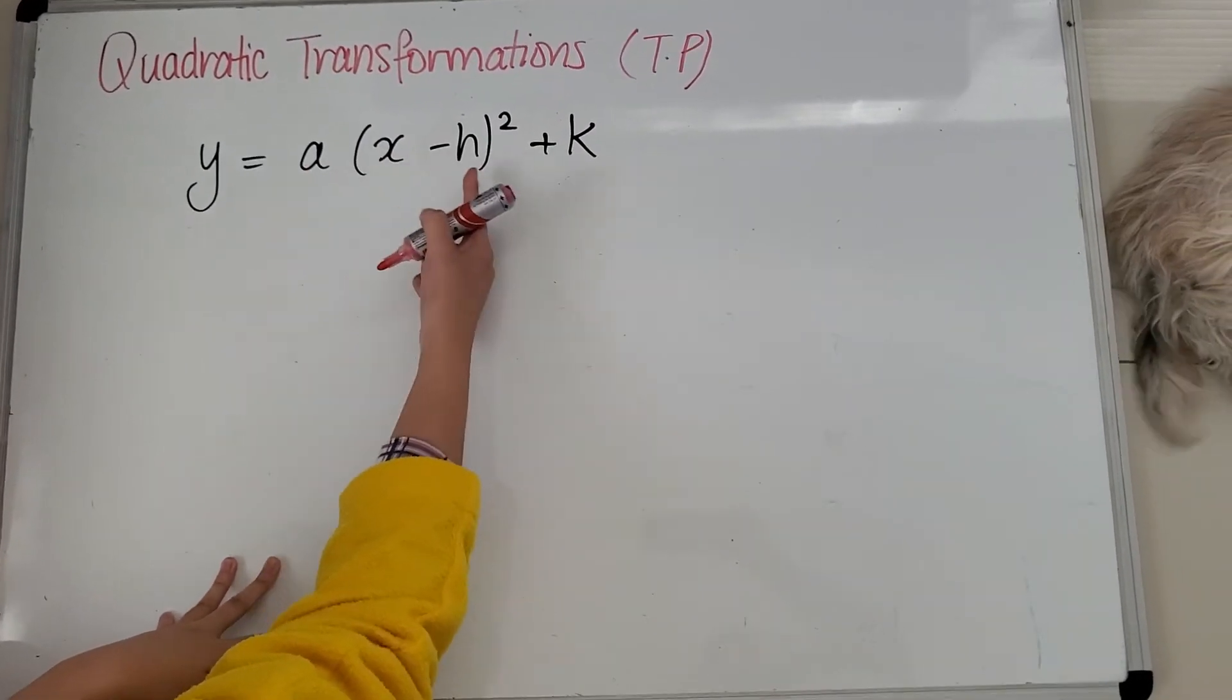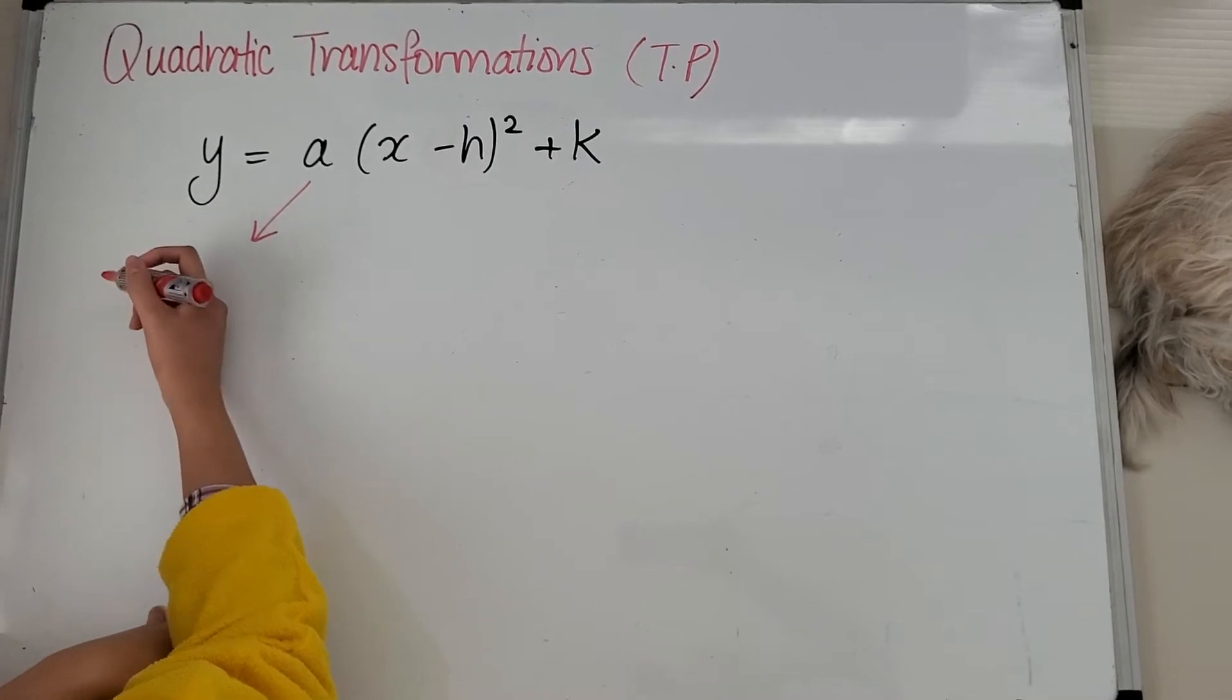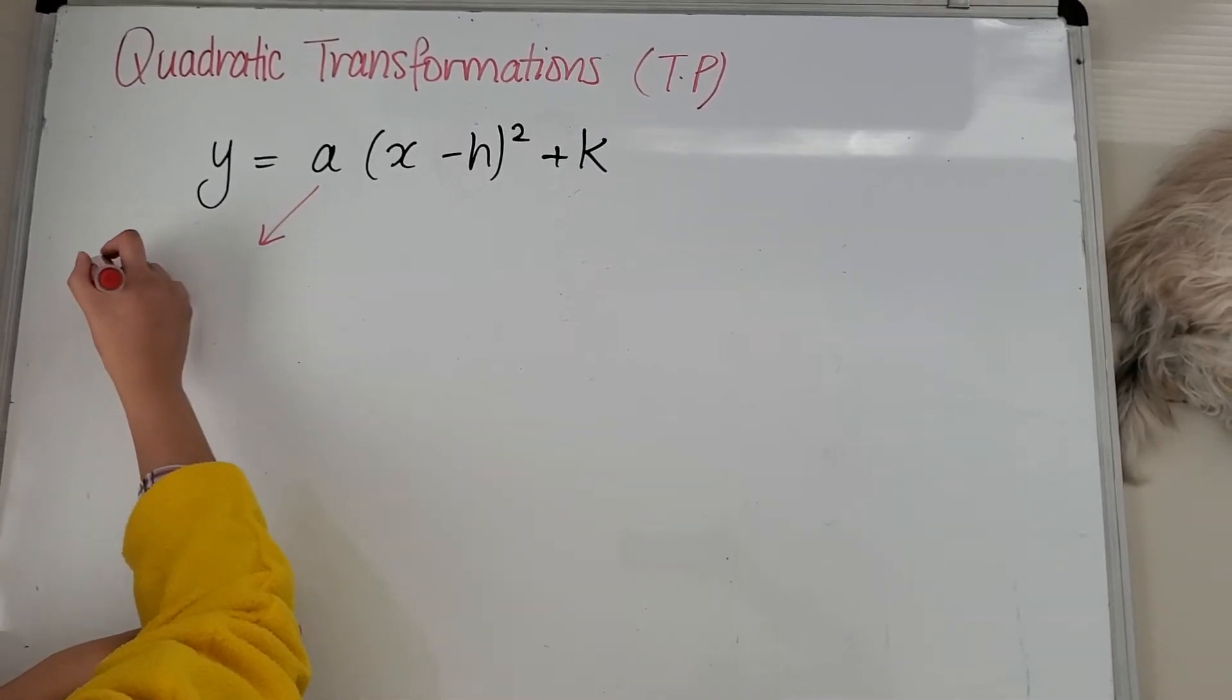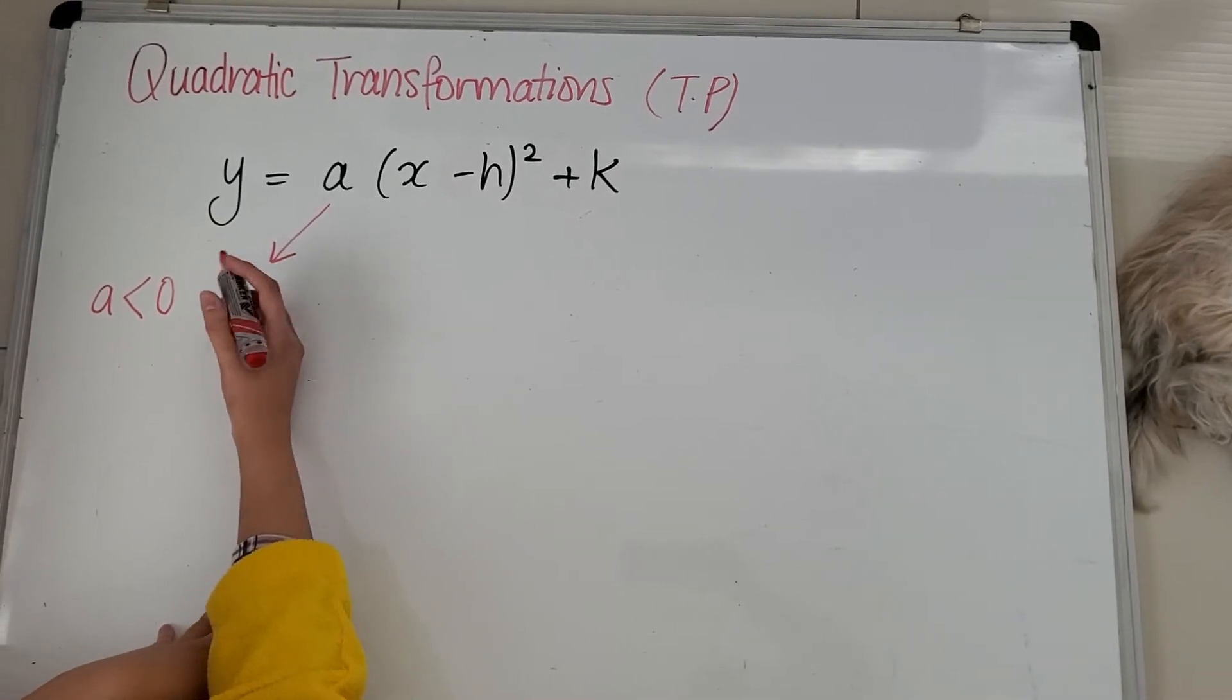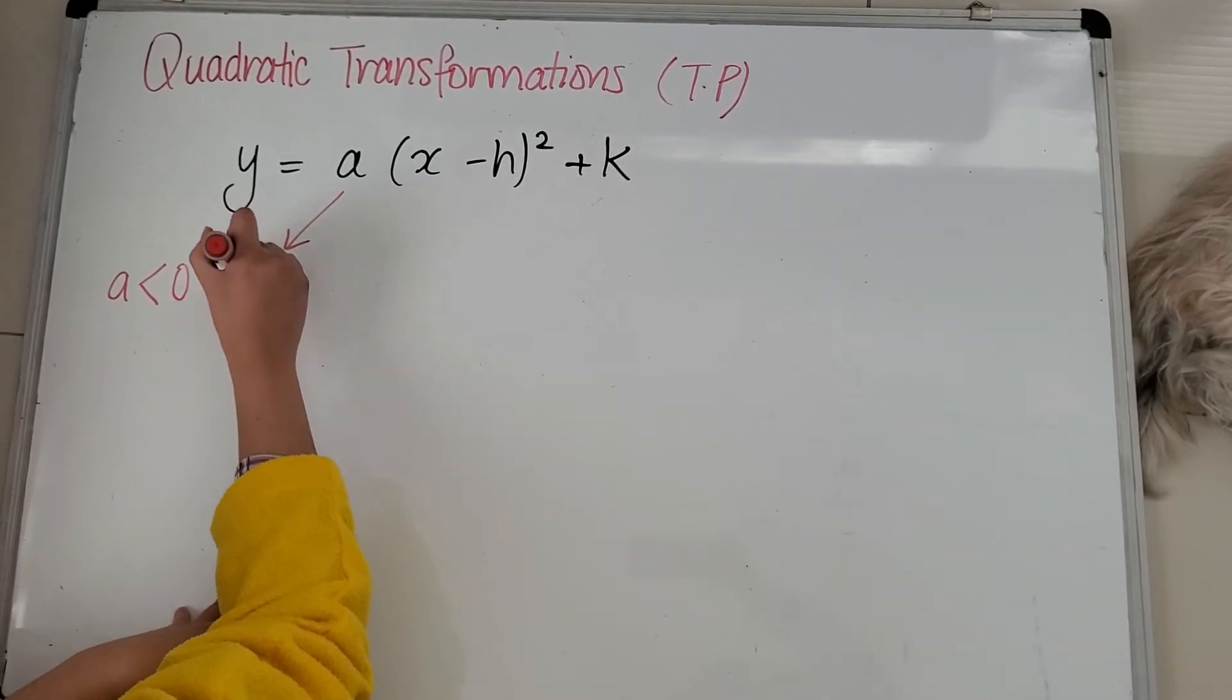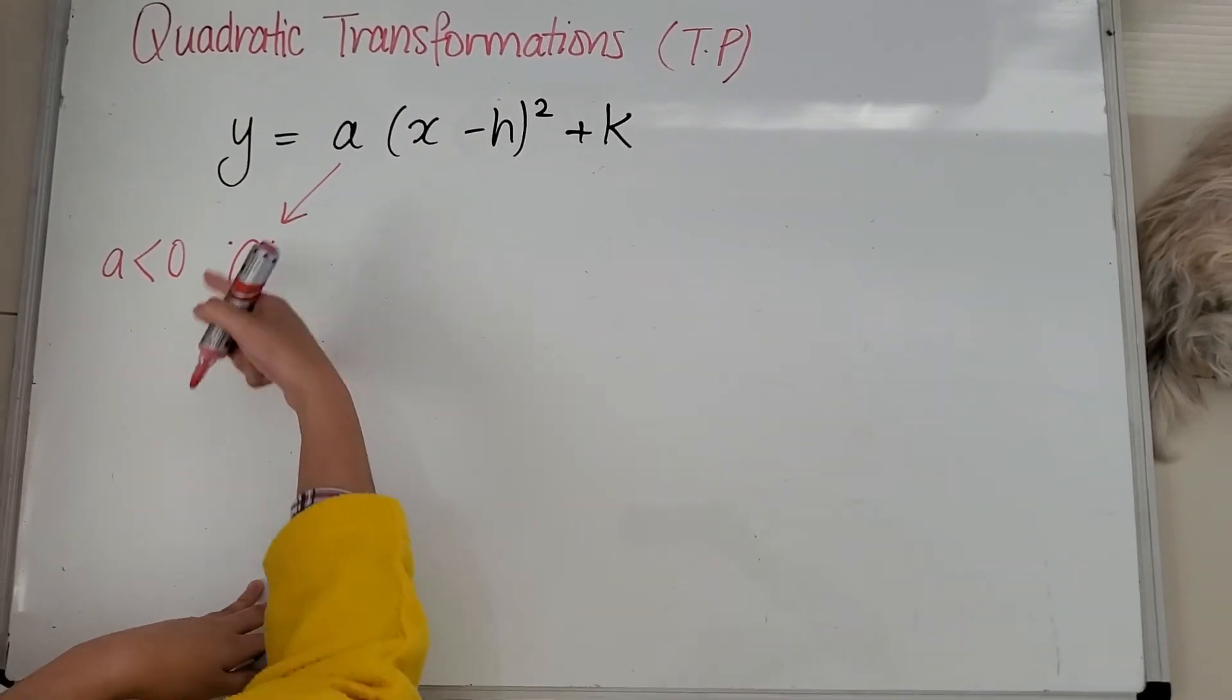Your coefficient in front of brackets will tell you the general shape and dilation. So if a is negative, less than zero, then it's a sad face shape. I usually draw like that just to let me know. Your quadratic will be in this form.